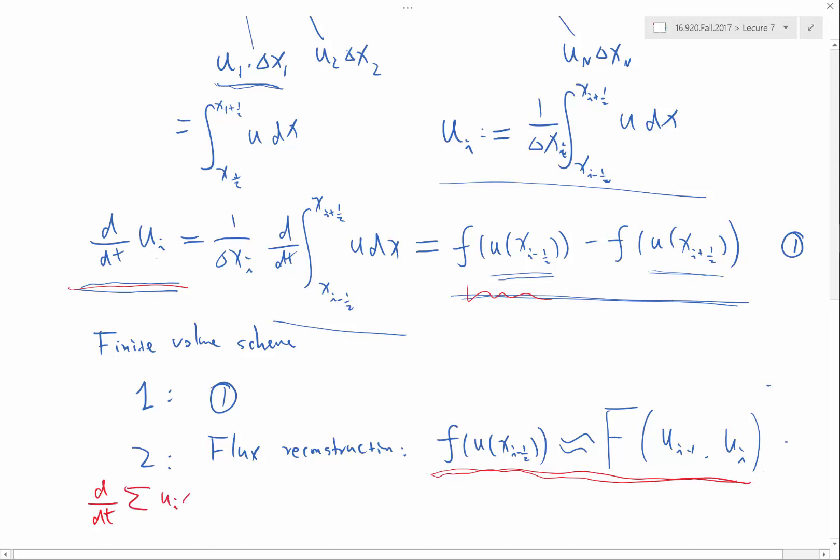I think I forgot divided by Δx_i here. Because I divided by Δx_i here, I should also divide by Δx_i here. So d/dt of the summation of u_i times Δx_i is equal to the summation over i of, now I have this Δx_i, so this Δx_i cancels.